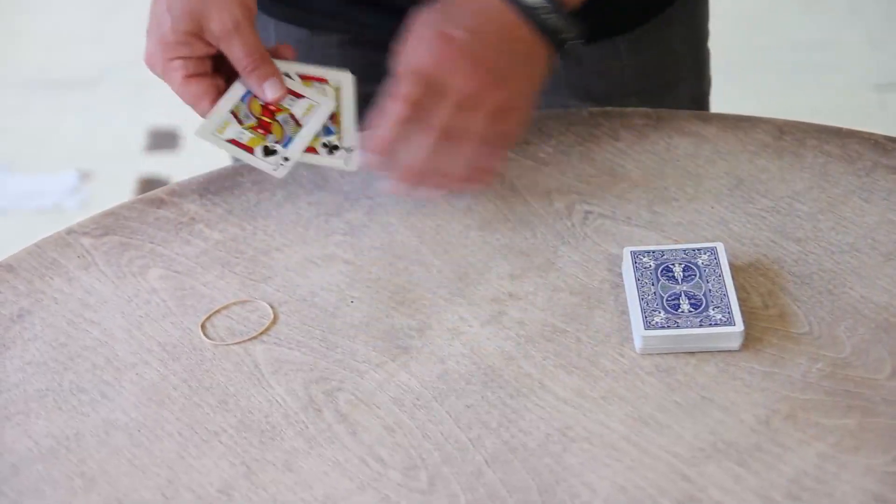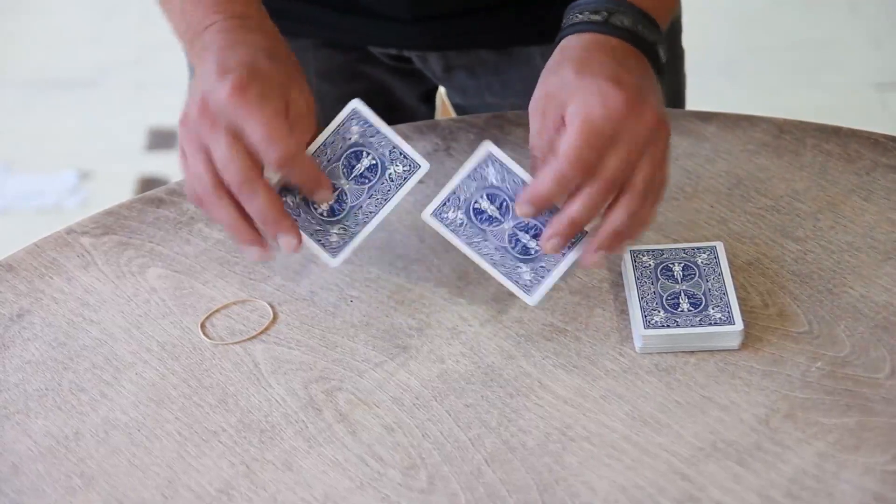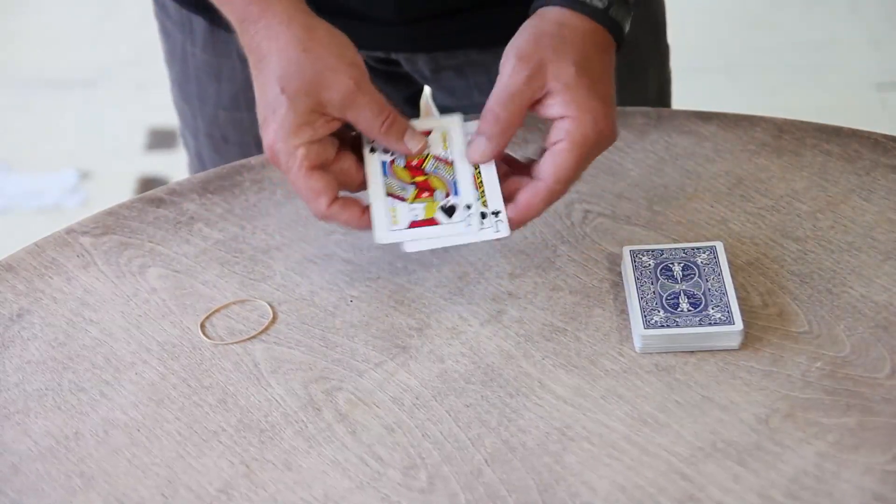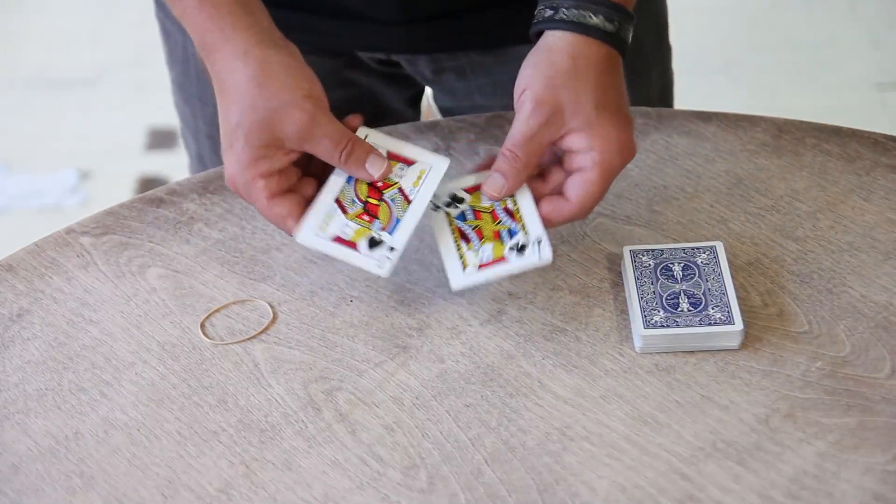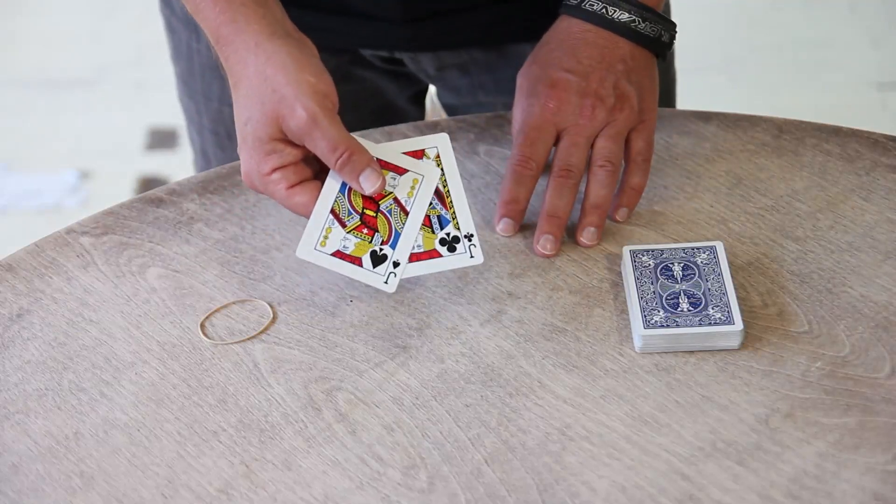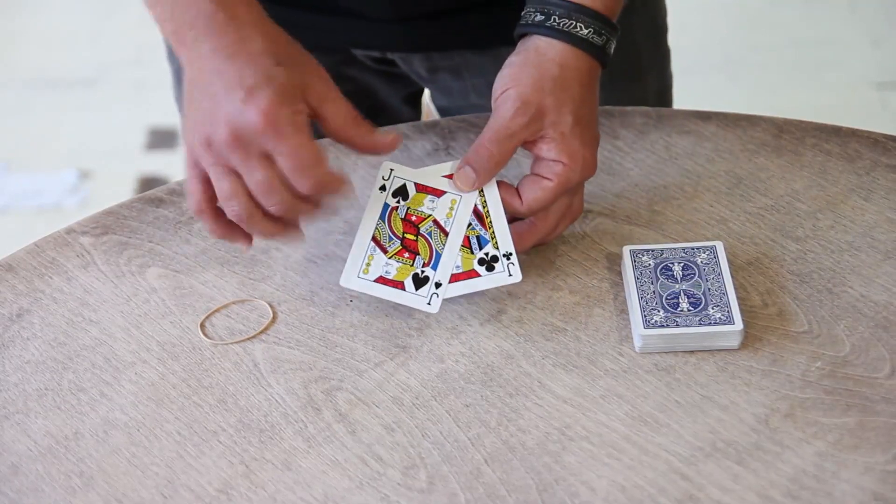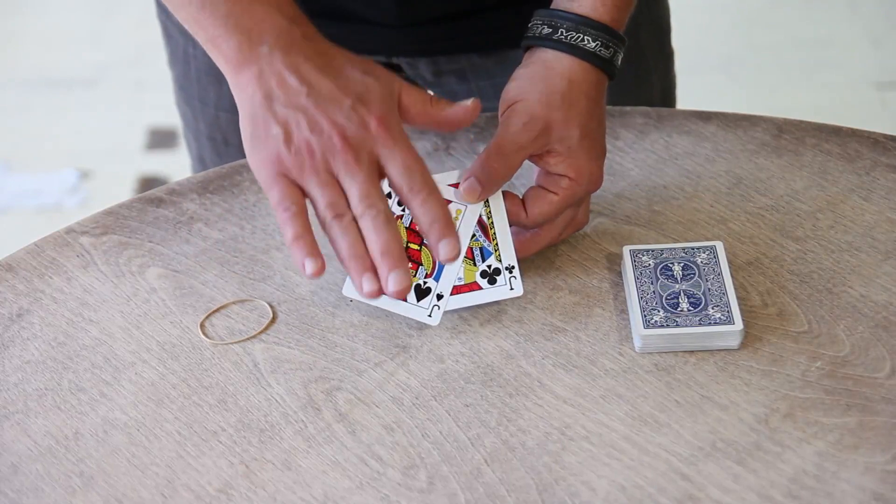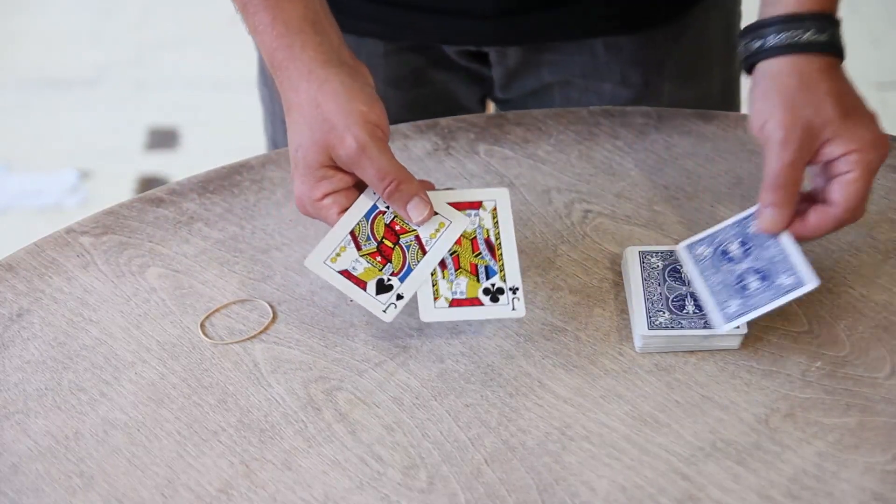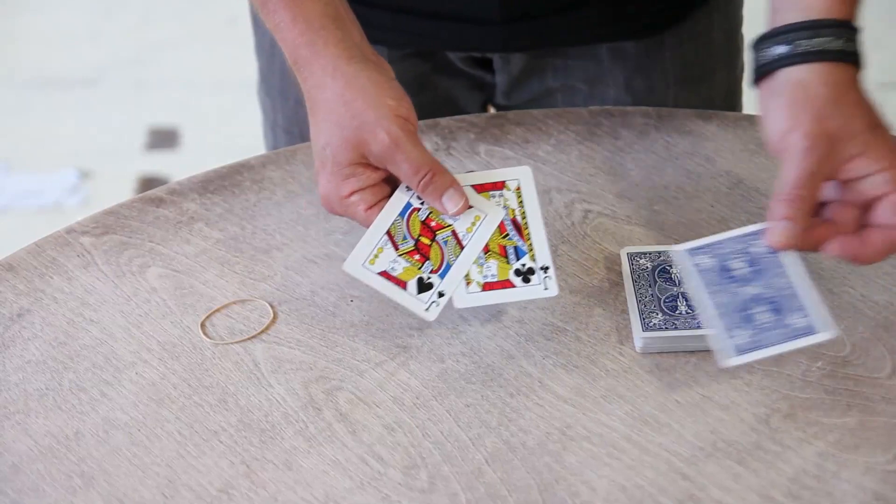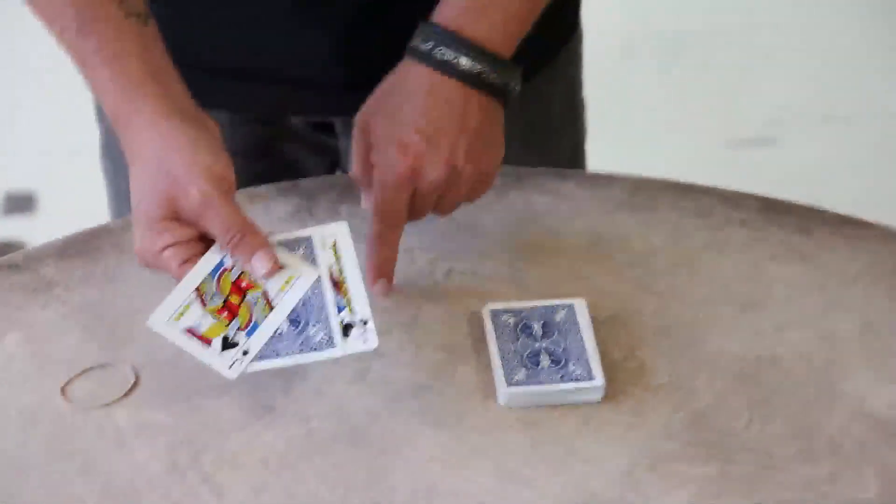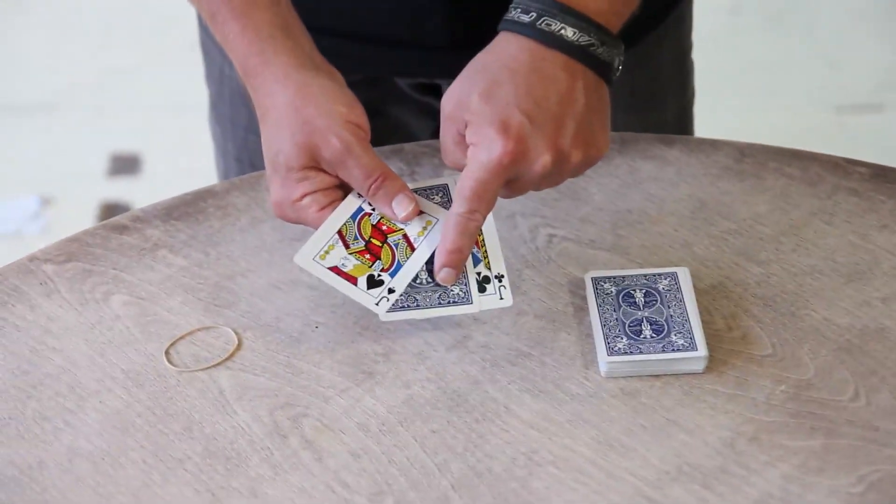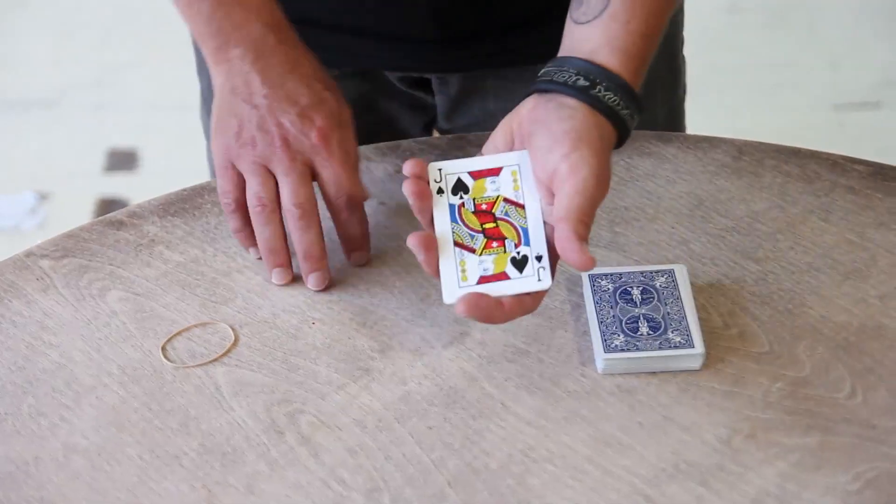If you've been doing card magic, even for probably six minutes, you have come across the plot, the theme, the idea, the effect of the sandwich trick. And the sandwich trick is very, very old, and the funny thing is it involves no bread, no cheese, no mayonnaise, no meat. Just two cards. But the sandwich idea is that two cards, a pair of cards, find a selected card, thus creating the meat sandwich.